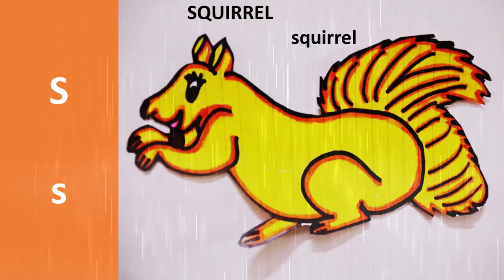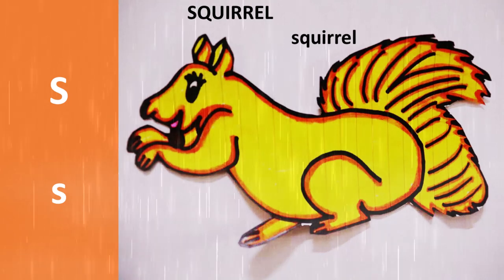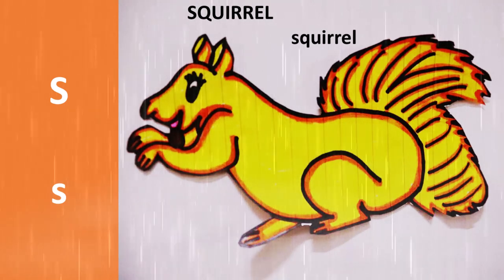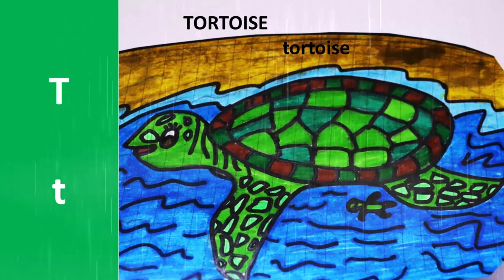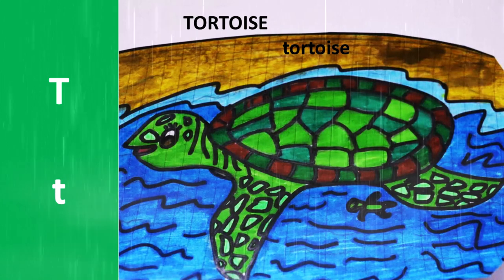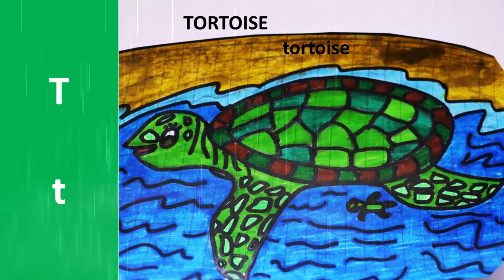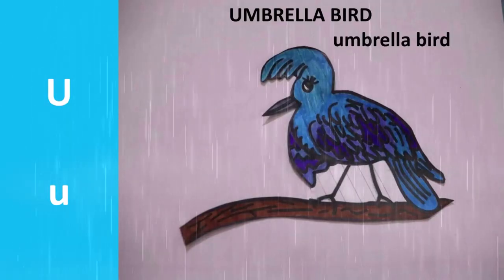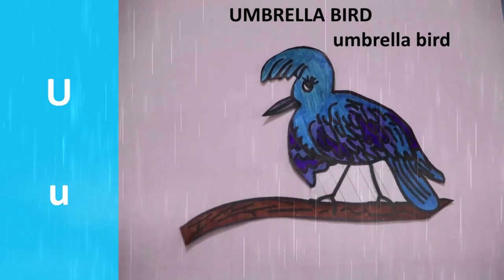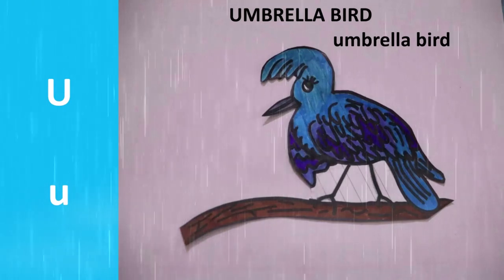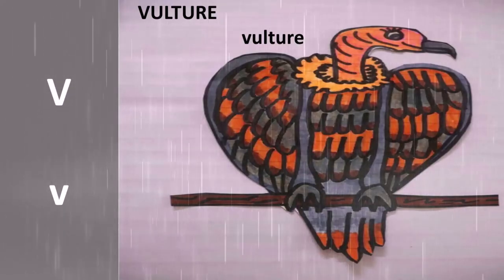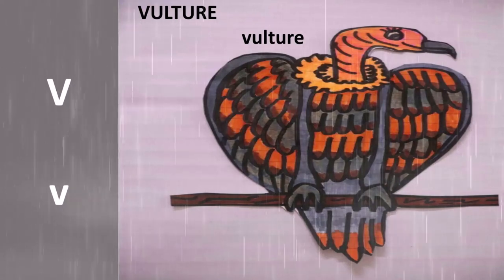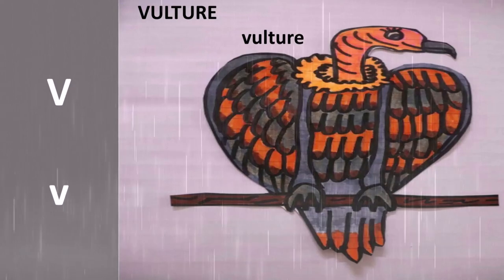Squirrel. S is for Squirrel. Tortoise. T is for Tortoise. Umbrella bird. U is for Umbrella bird. Vulture. V is for Vulture.